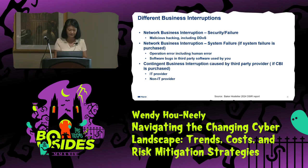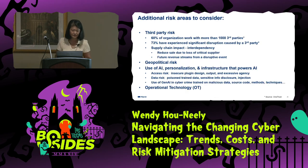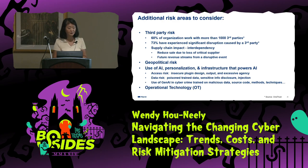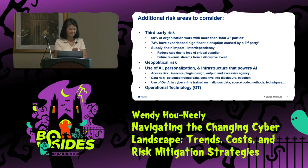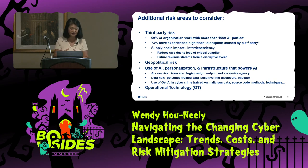Key numbers to point out for business disruption risk: 60% of organizations have more than 1,000 third-party partners — that's a huge number. More than half — 73% — have experienced significant disruptions caused by a third party, whether it's a data breach or something else. So third-party risk is very significant. You all know about supply chains and common interdependencies of software, hardware, and cloud storage.